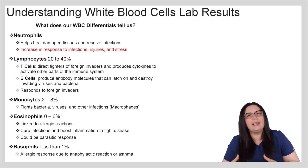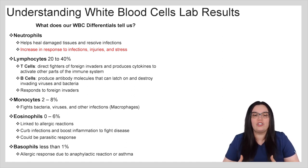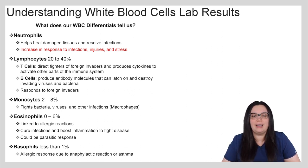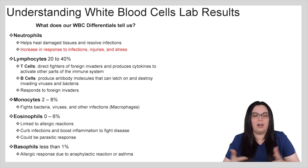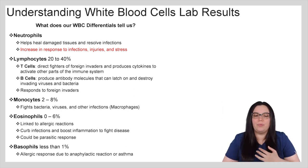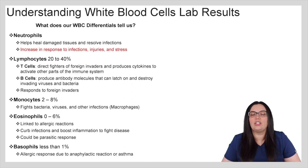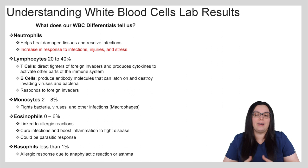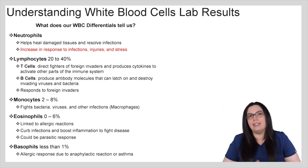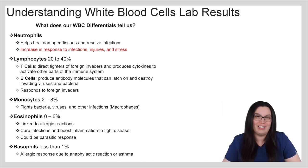Eosinophils are usually linked to some kind of allergic reaction — they help curb infections and boost inflammation to fight disease, and can be elevated in response to parasites. Lastly, basophils are associated with allergic responses due to anaphylactic reactions or asthma. So if you have a patient with anaphylactic allergies to peanuts, you're going to see an increase in basophils if they were to eat a peanut and go into an anaphylactic reaction.